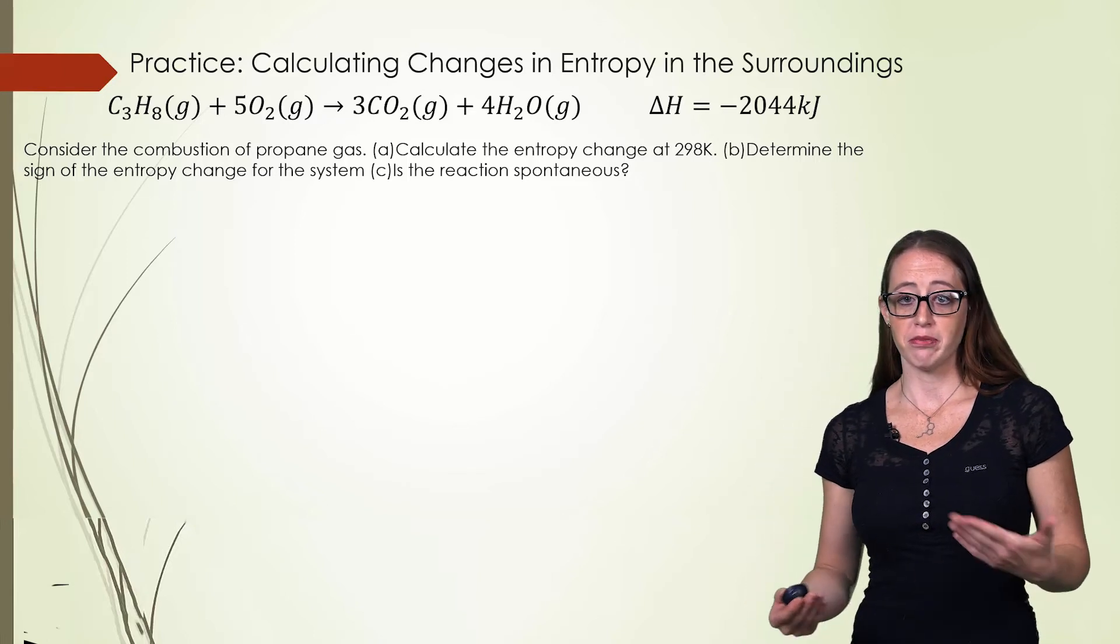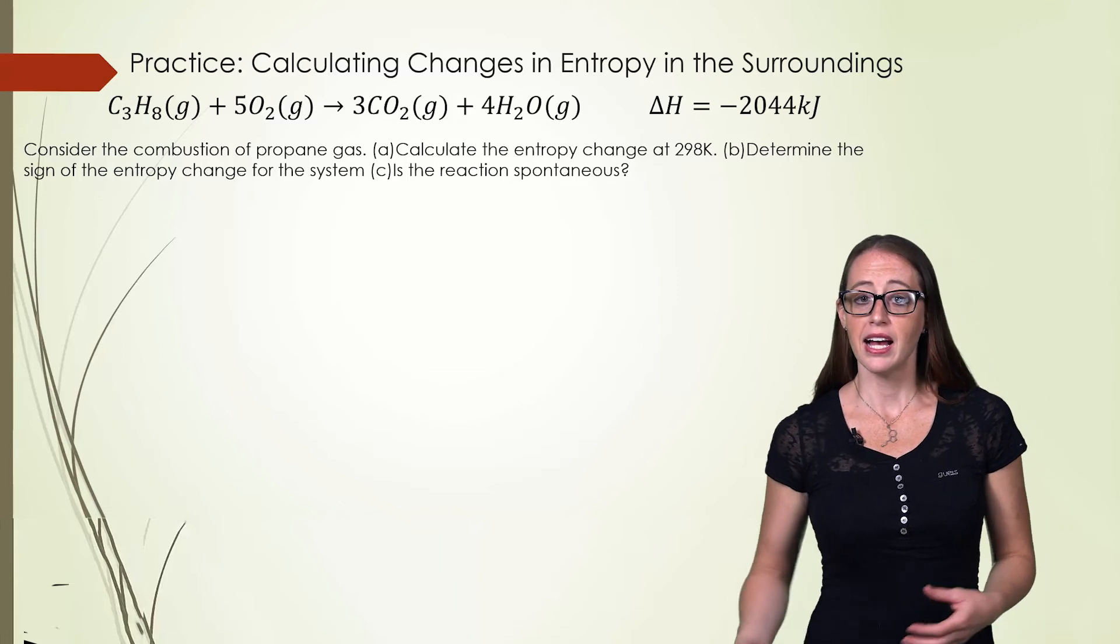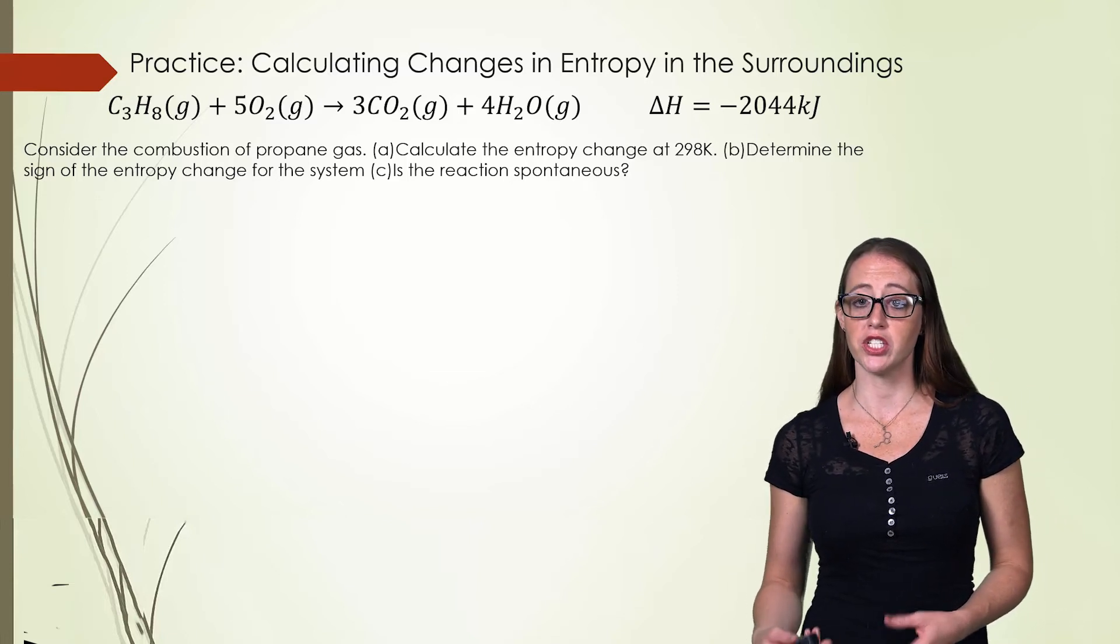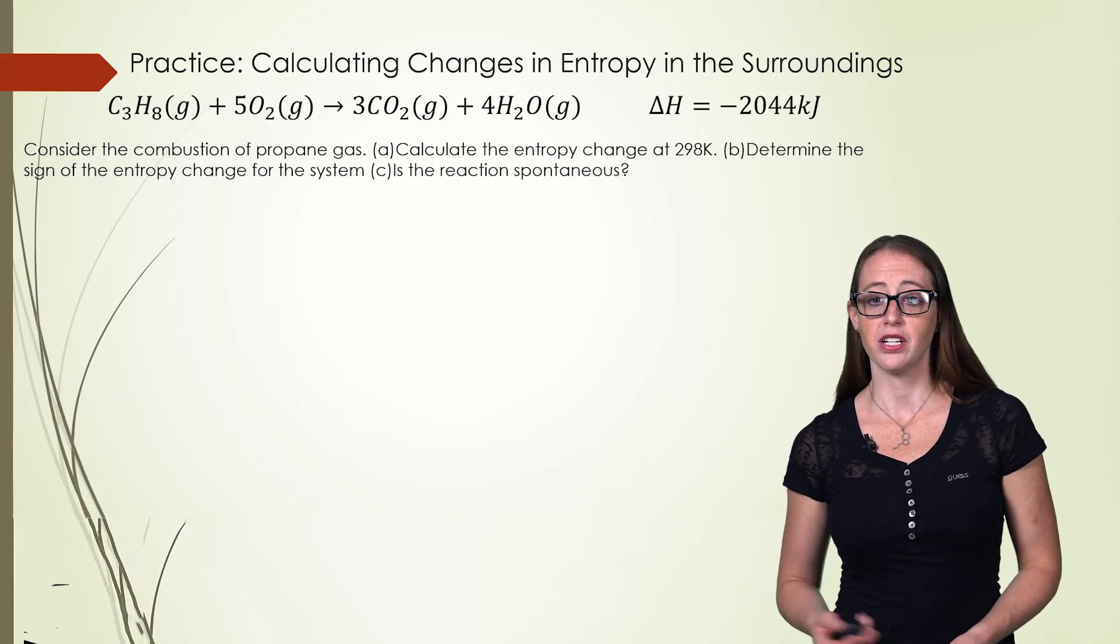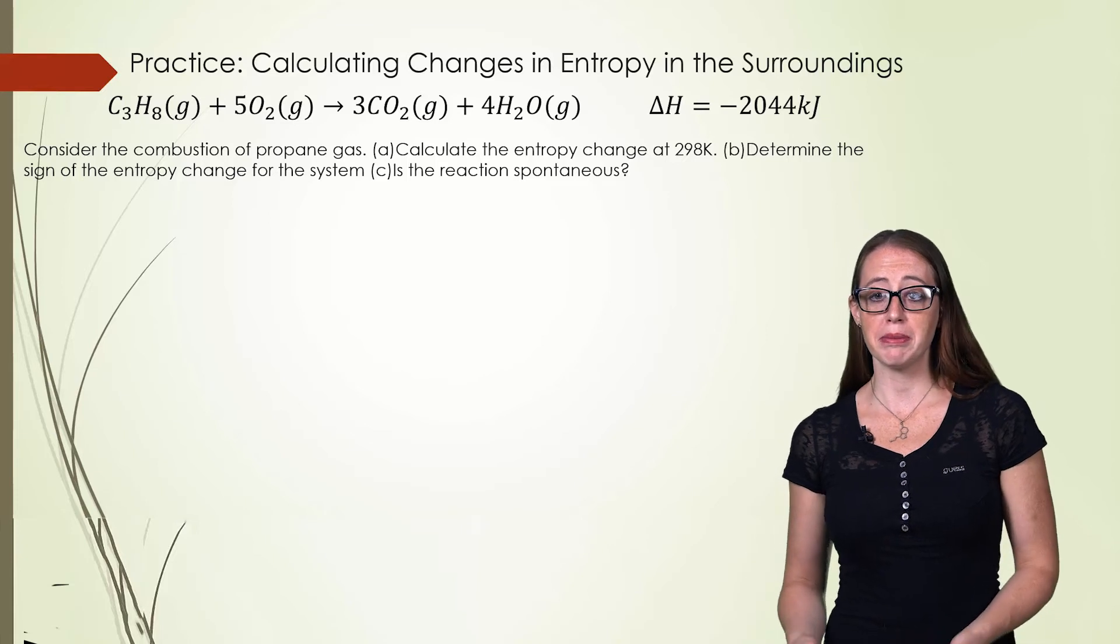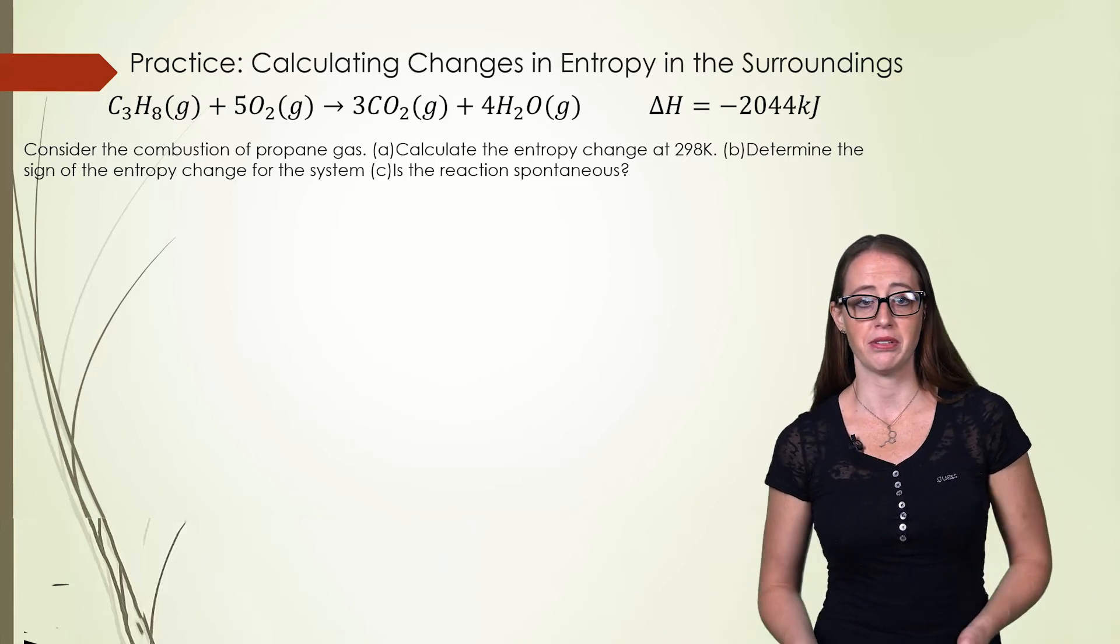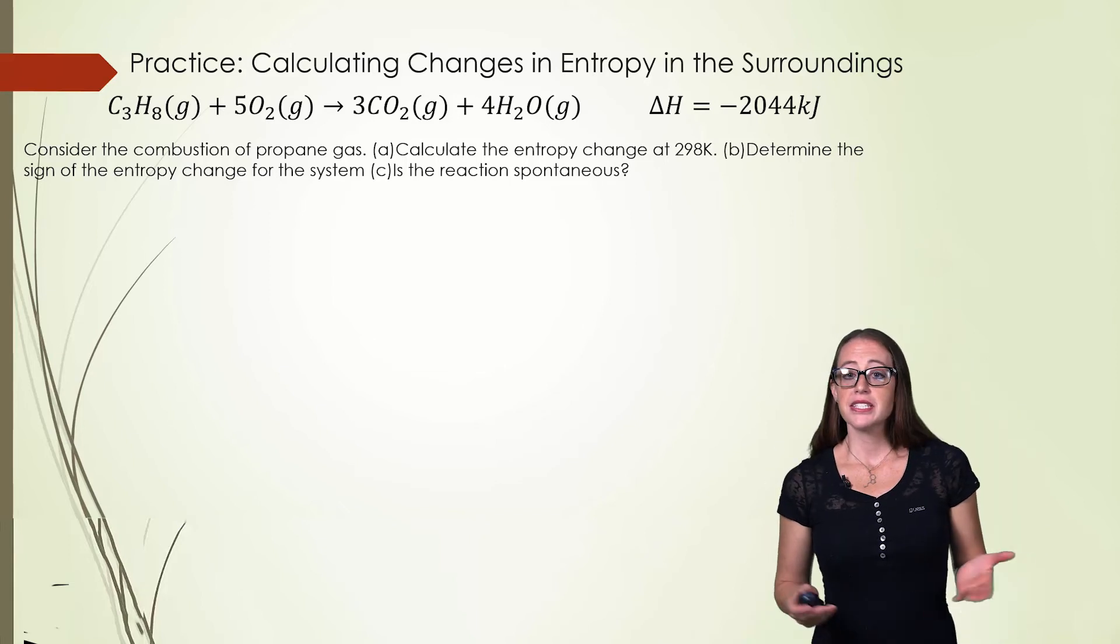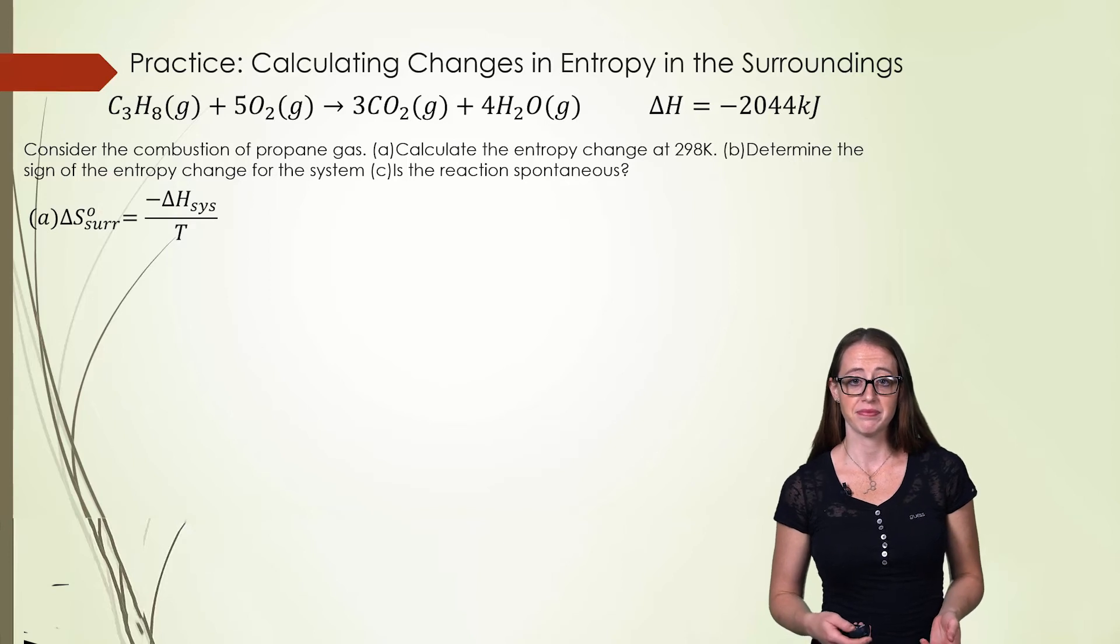Here we have the combustion of propane and I give you the enthalpy. From this I ask you to calculate the entropy change of the surroundings and to decide on the sign of the entropy change of the system. After you have all of this you might be able to tell if the system is spontaneous or not. It might also be possible that you'd need more information. To calculate the entropy change in the surroundings we'll use the equation from the previous slide. Try this yourself before moving on.